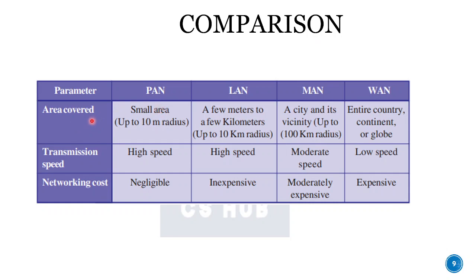Now, we compare the network types. In terms of area covered: PAN has a maximum radius of 10 meters, LAN has a maximum radius of 10 kilometers, MAN covers about 100 kilometers, and WAN is beyond those limits — around the globe.